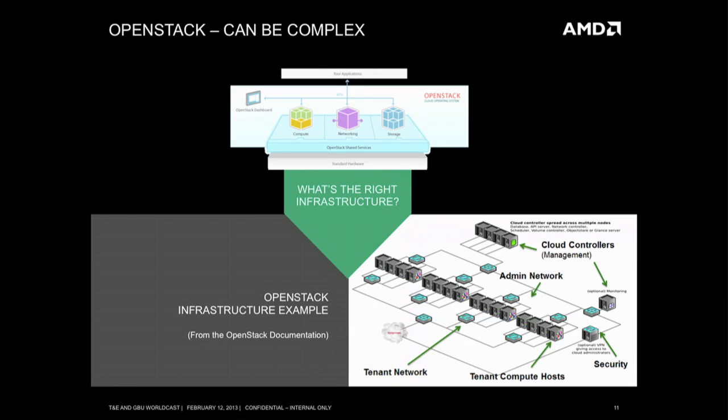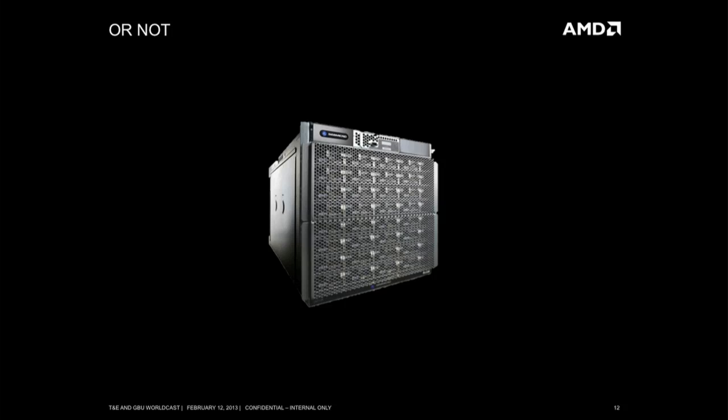Now let's switch over to the full OpenStack infrastructure-as-a-service picture — Nova Compute, Quantum networking, and storage together. If you set up this infrastructure yourself, you need servers running hypervisors, an administrative network, cloud management servers, security, monitoring, and tenant-facing networks. Our philosophy at C-Micro is that with this converged platform, we're able to take all of these elements and deliver all of OpenStack in a single platform.